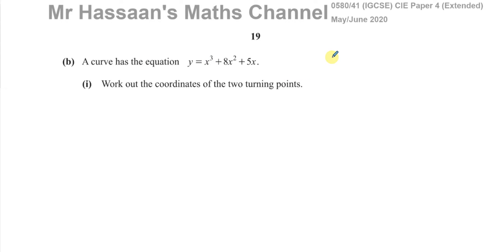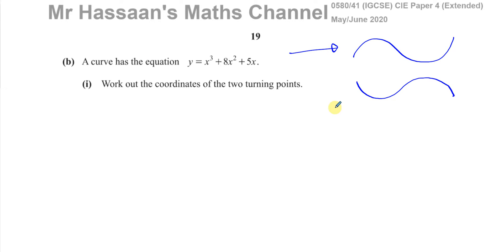A cubic curve has either one shape or another. If the coefficient of x cubed is positive, it will be going up, then down, then up again — it comes from below, turns, turns again, and then goes up. So when x cubed has a positive coefficient, you have the maximum before the minimum. If x cubed has a negative coefficient, you have the minimum before the maximum.